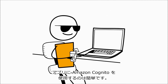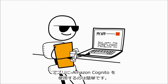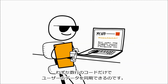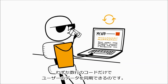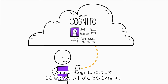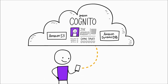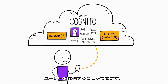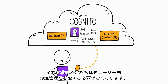It's really easy to use Amazon Cognito with your app. Instead of taking months to build a solution yourself, it just takes a few lines of code to be able to sync your user's data. If you're using other AWS services, Amazon Cognito provides you with even more benefits, like delivering temporary credentials with limited privileges that users can use to access AWS resources, saving you from having to worry about credential management.